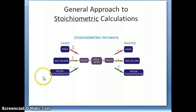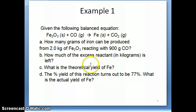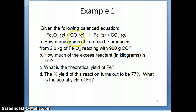I'm going to illustrate this approach with the following problem. The reaction is Fe2O3 plus CO going to Fe and CO2, and there are a series of questions based on that reaction. The first question asks how many grams of iron can be produced if you mix 2 kilograms of the first reactant with 900 grams of the second reactant.